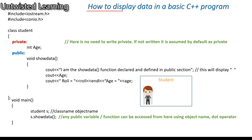Let us understand how to display data in a basic C++ program. I have created a class student. By default, the first section is private — you need not write the private keyword, but I am writing it here for demonstration. After writing the private keyword, you give a colon. Then I am declaring age as a private variable.